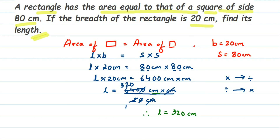That is it — we got the answer. The length is 320 centimeter. I hope this question is clear. The key is to equate both areas, put the formula, substitute everything you know from the question, and get the answer. If you have any questions or doubts, you can drop a comment. Thank you so much for watching.